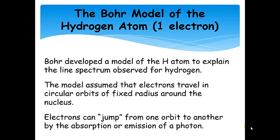Bohr was intrigued by these experiments and he developed a model of the hydrogen atom to explain these line spectra. The model assumed that electrons travel in circular orbits of fixed radius around the nucleus. That means whichever orbit they are in, they are at a specific radius around that nucleus. He also envisioned that they can jump from one orbit to another when they absorb or emit a photon.